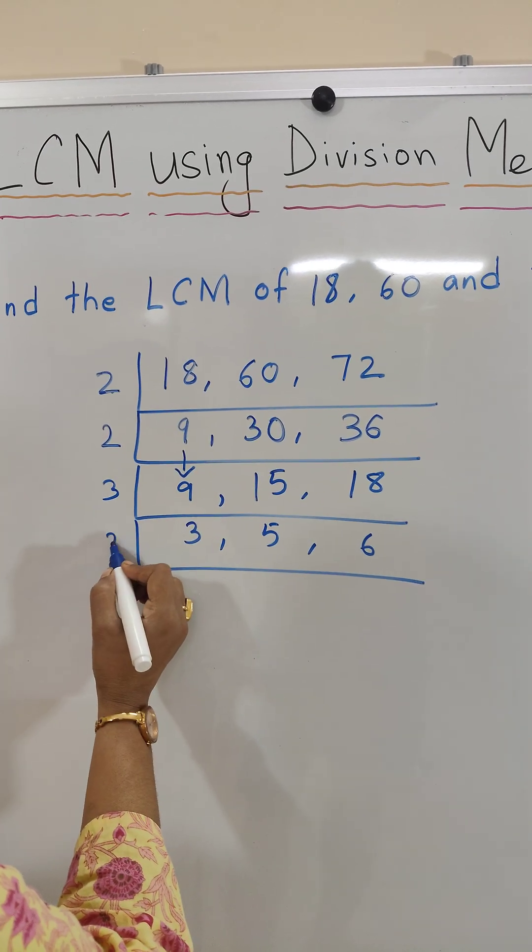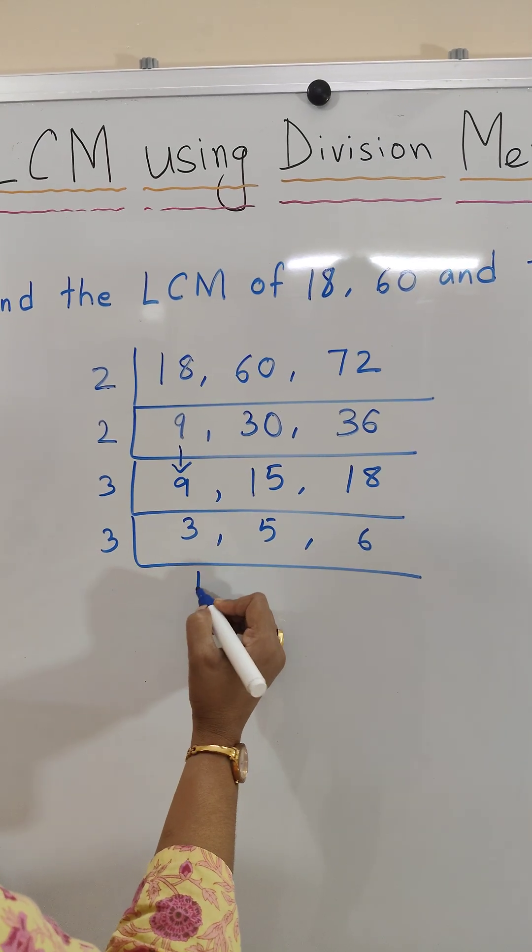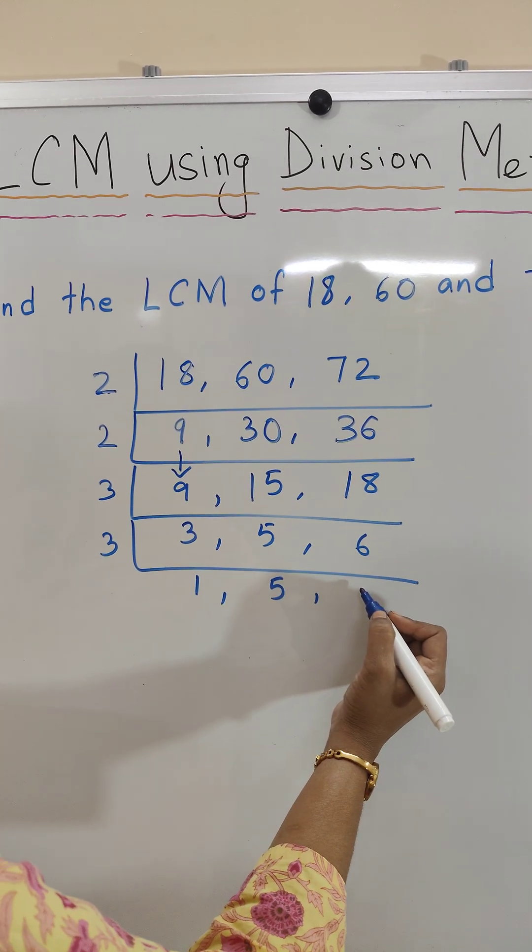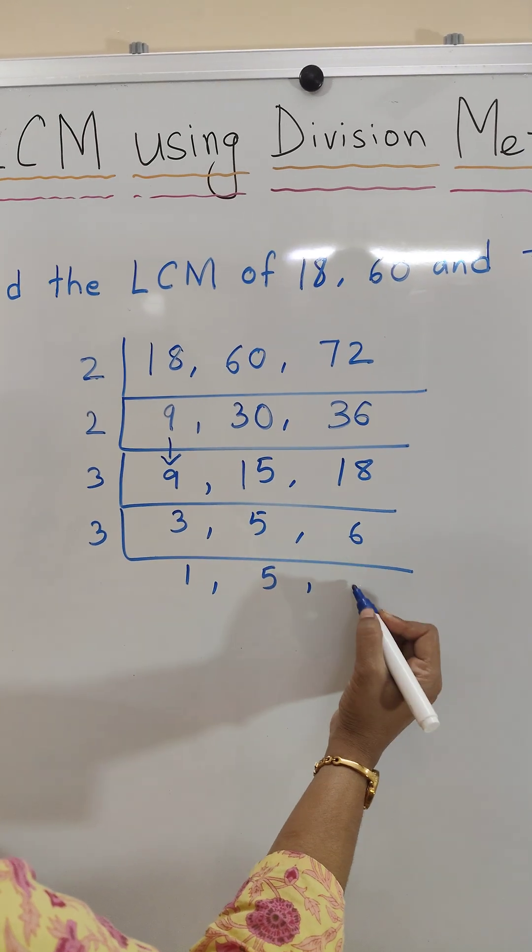Let's take prime number 3 again. 3 divided by 3, 5 will remain as it is because we can't divide exactly by 3, and 6 divided by 3 is 2.